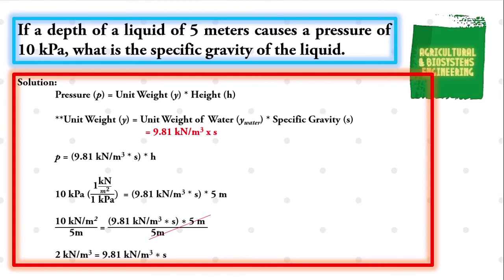Giving us 2 kilonewtons per cubic meter is equal to 9.81 kilonewtons per cubic meter times the specific gravity. We divide both sides with 9.81 kilonewtons per cubic meter and cancel out 9.81 kilonewtons per cubic meter on the right side.